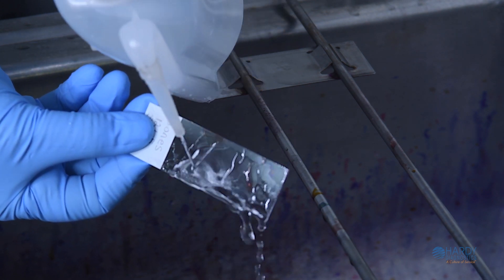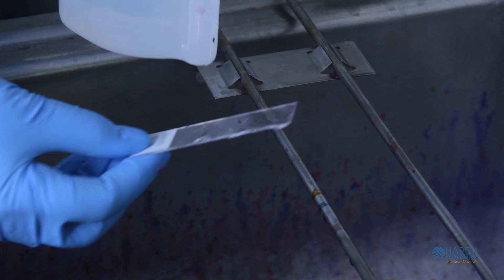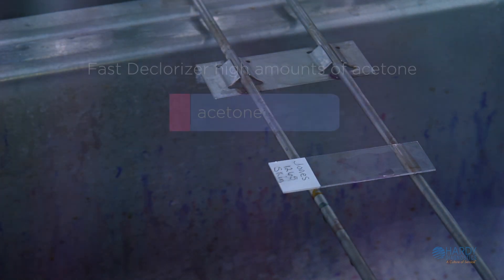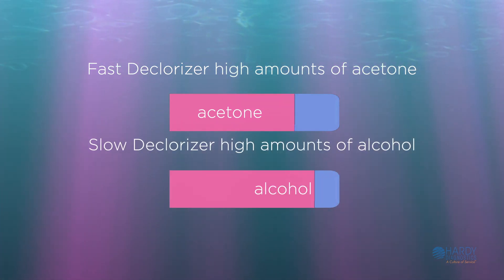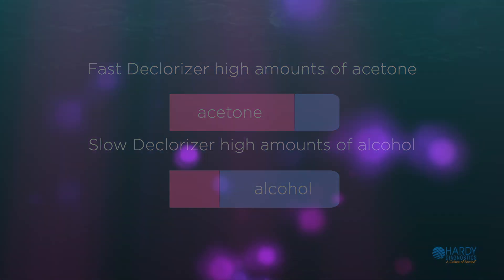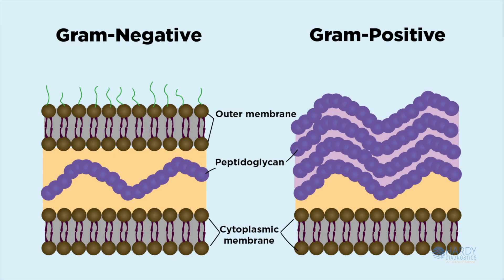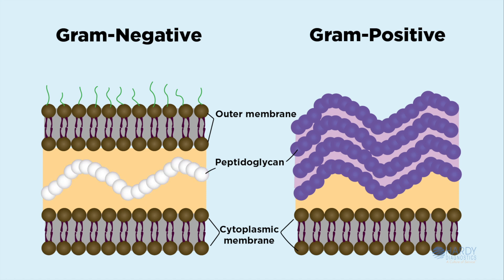The decolorizer is composed of a ratio of alcohol to acetone. The ratio is normally a personal preference, with faster decolorizers containing higher concentrations of acetone and slower ones containing higher concentrations of alcohol. When decolorizer is added to the smear, lipids are extracted from the cell wall of gram-negative bacteria. Lipid extraction causes an increase in cell wall permeability and the cell becomes leaky, resulting in the loss of the purple dye-mordant complex from the thin peptidoglycan layer.